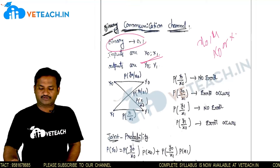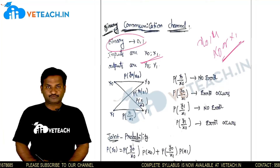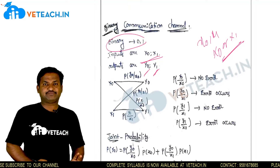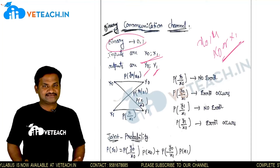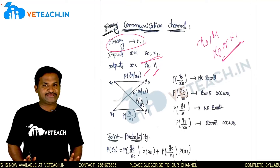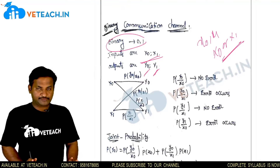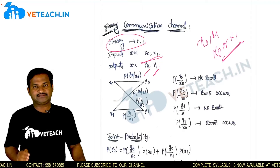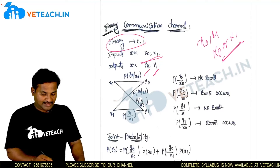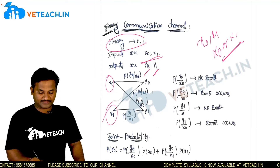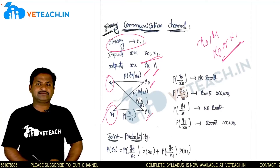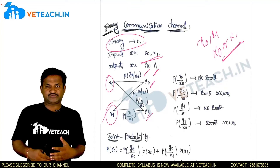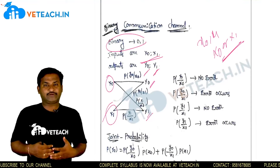The outputs are y0 and y1. So we can represent only two inputs and two outputs in terms of binary. In terms of discrete channels, we can represent many inputs and many outputs. In terms of probability, joint probability, and conditional probability — x0 and x1 are the inputs, y0 and y1 are the outputs. What are the possible connections from x0 to y0, x0 to y1, x1 to y0, x1 to y1?